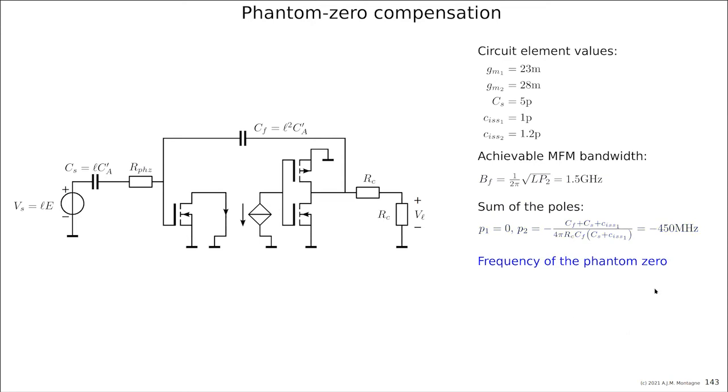We can calculate the phantom zero. What we basically are going to do is we are increasing the coefficient that is setting the sum of the pole to 450 megahertz. We are increasing this coefficient in the differential equation so that it becomes 2 gigahertz, which is the square root of two times 1.5 gigahertz. So it requires a phantom zero at 1 gigahertz.